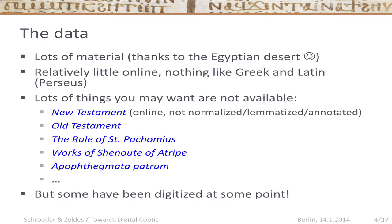Coptic has a lot of material — it's not one of those little languages where there are a few inscriptions and then you're done. Thanks to the Egyptian desert, massive amounts of papyrus material have been preserved, which makes for very happy philologists. And yet, perhaps surprisingly, there's relatively little of it online. You cannot compare the situation for Coptic online with that of Greek and Latin. For Greek and Latin, if you look at something like Perseus, you're fairly confident you can find whatever you need. Nobody doubts you can get the Odyssey. That's very much not the case for Coptic. Name an important Coptic text — you probably can't have it in digital format. If you're lucky, you'll find a scanned PDF of a book, but in many cases there is no book.